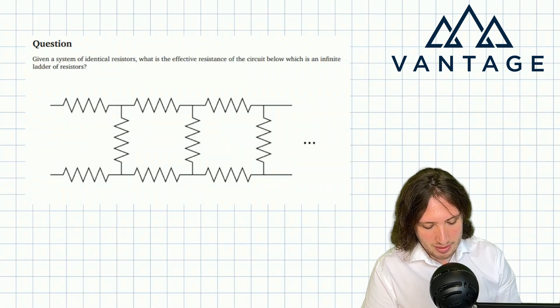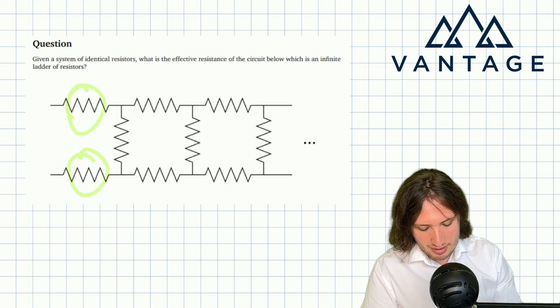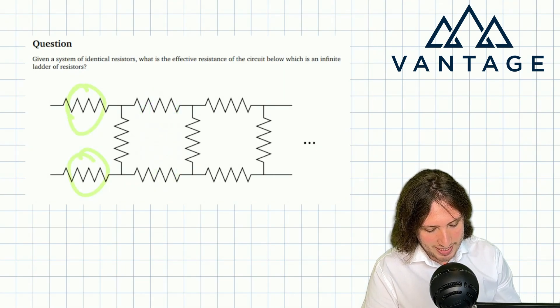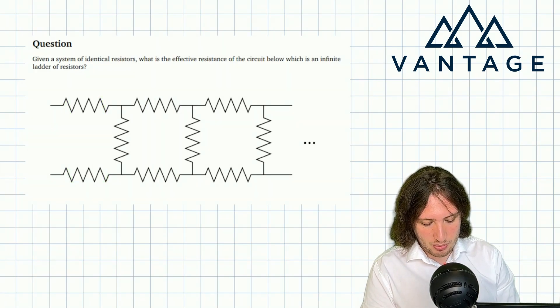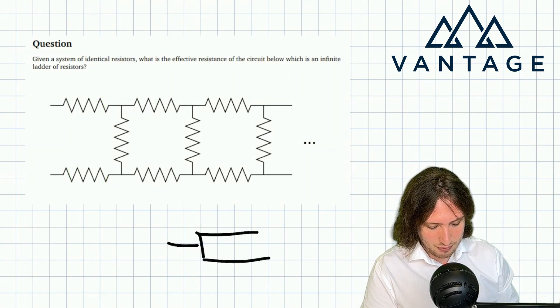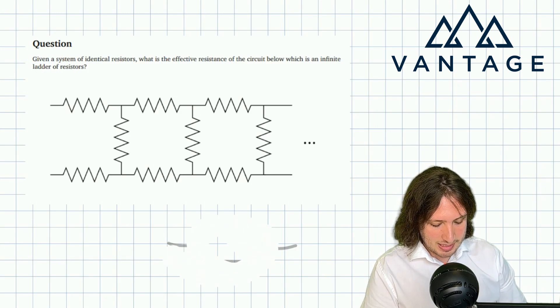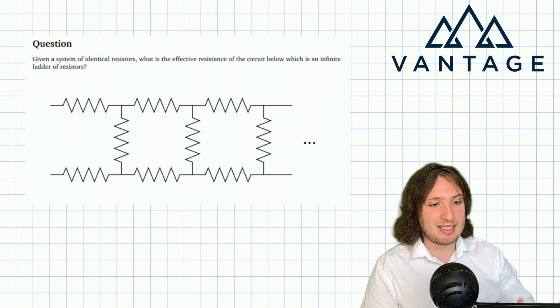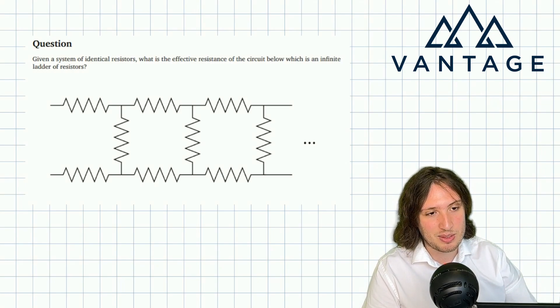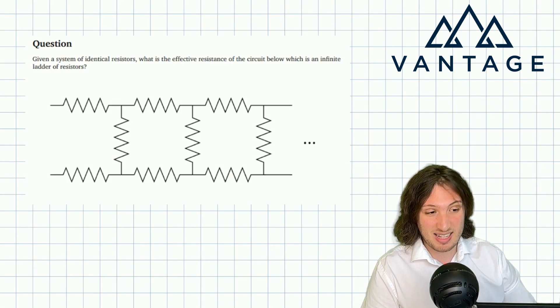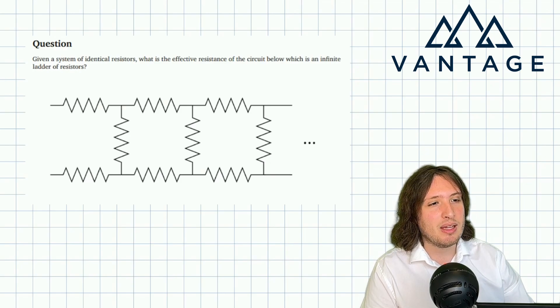Now you might notice looking at this problem first of all that we have this slightly unfamiliar symbol, this jagged line. It just means resistor. The reason we're not using the symbol that's more standard for resistors on A-level courses is simply for authenticity. The interviewer chose to use this symbol. We see this symbol quite a lot in these interviews so it's a good idea to be prepared.